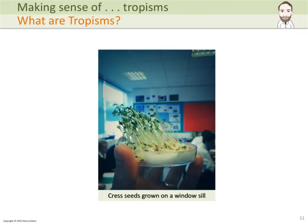Here is an example of some cress seeds that have been grown on a windowsill. They are all clearly pointing in one direction, which is towards the light. This is an example of positive phototropism — positive because it's growing towards the light, and photo for light.